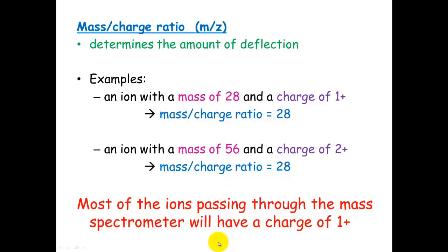Most of the ions passing through a mass spectrometer, though, will have a charge of plus 1, which means that this isn't too much of a worry. But it's something that you need to remember and to take notice of, because charge is important in the deflection through a mass spectrometer.